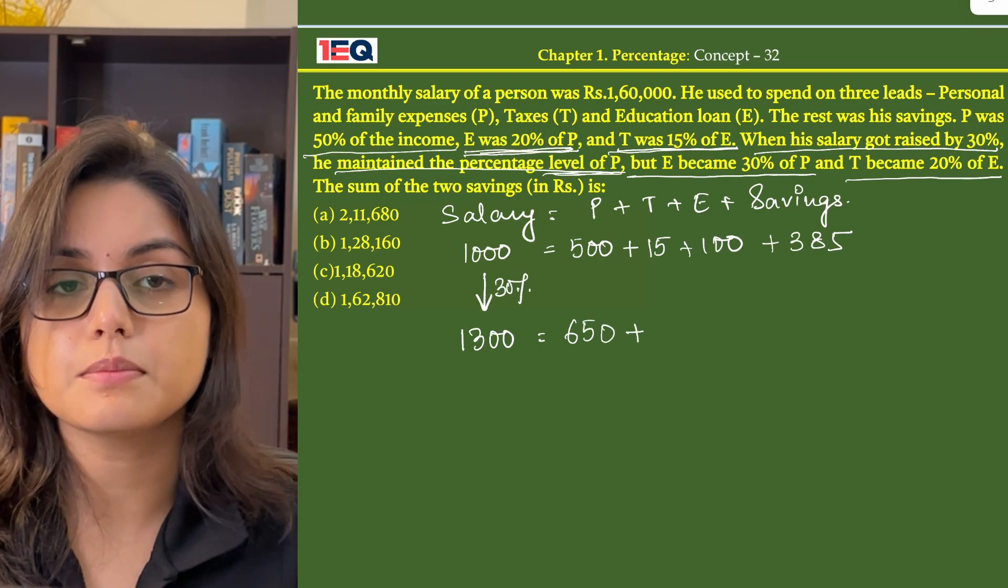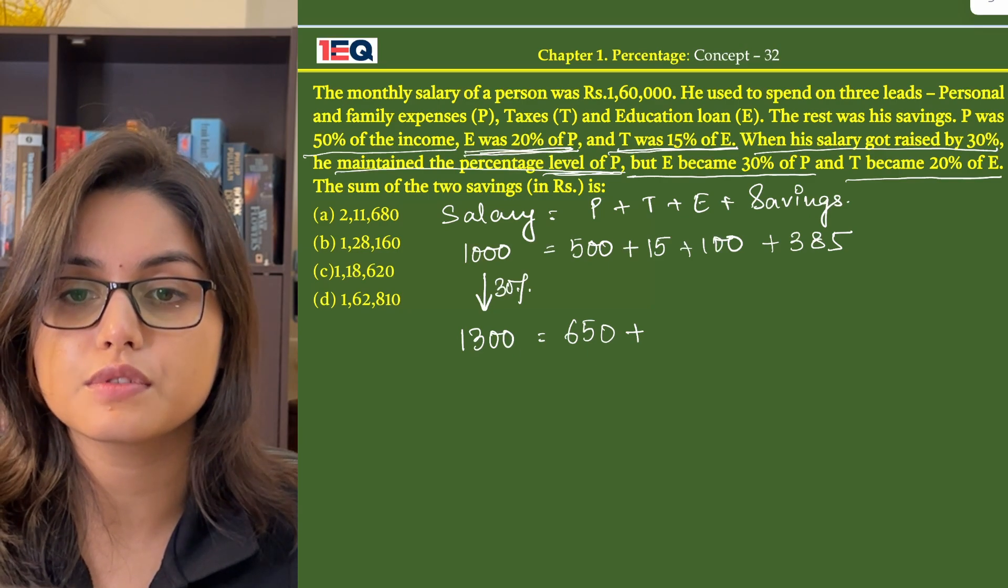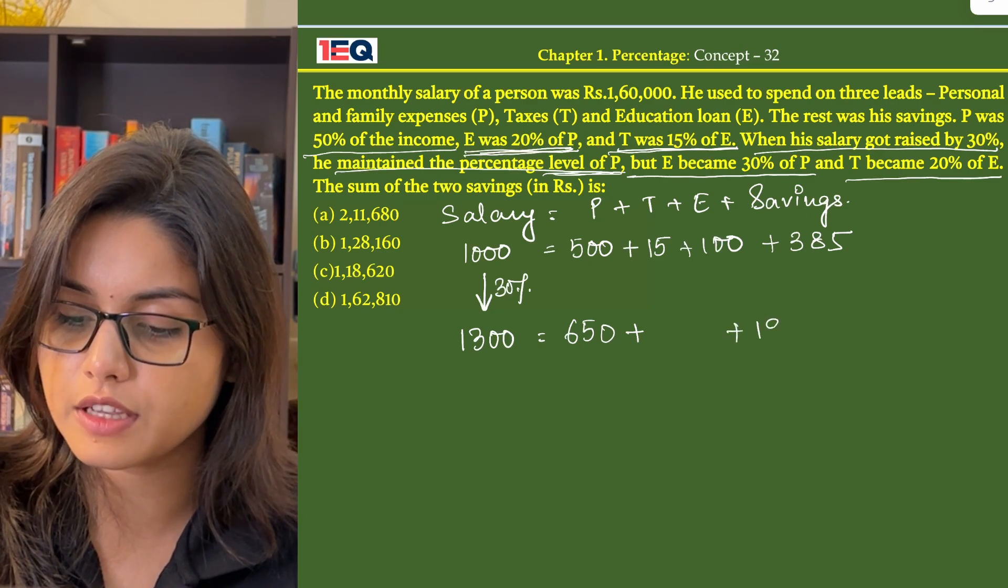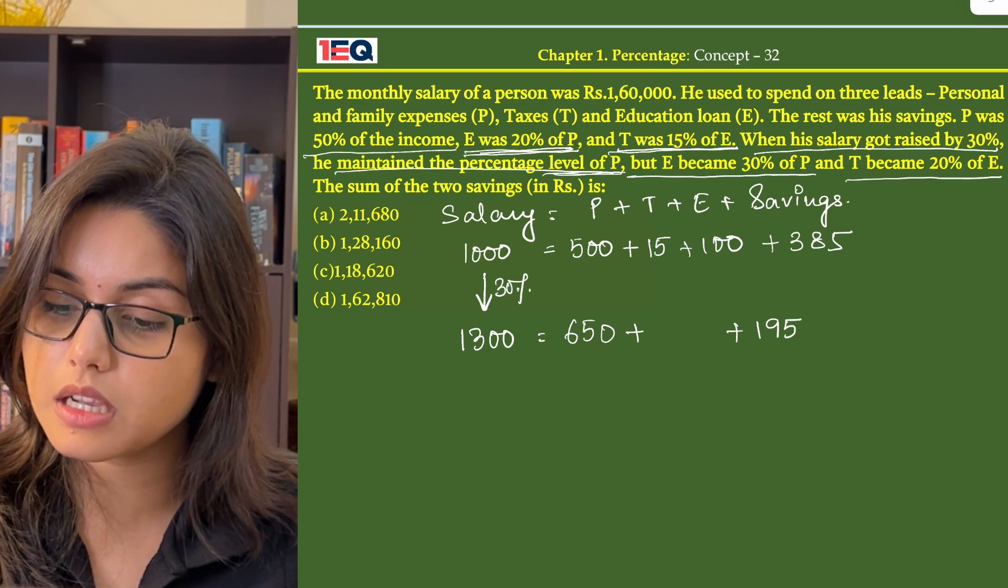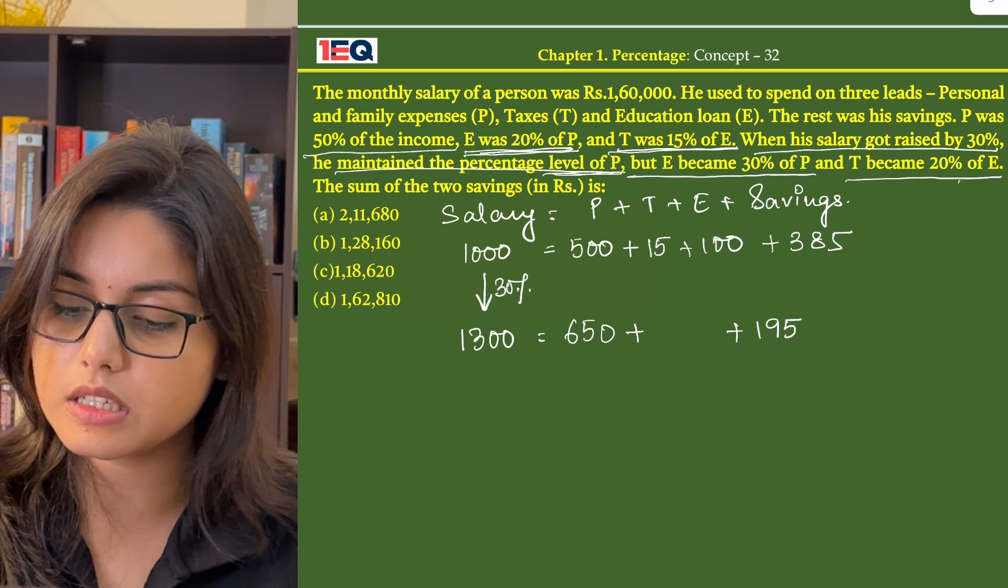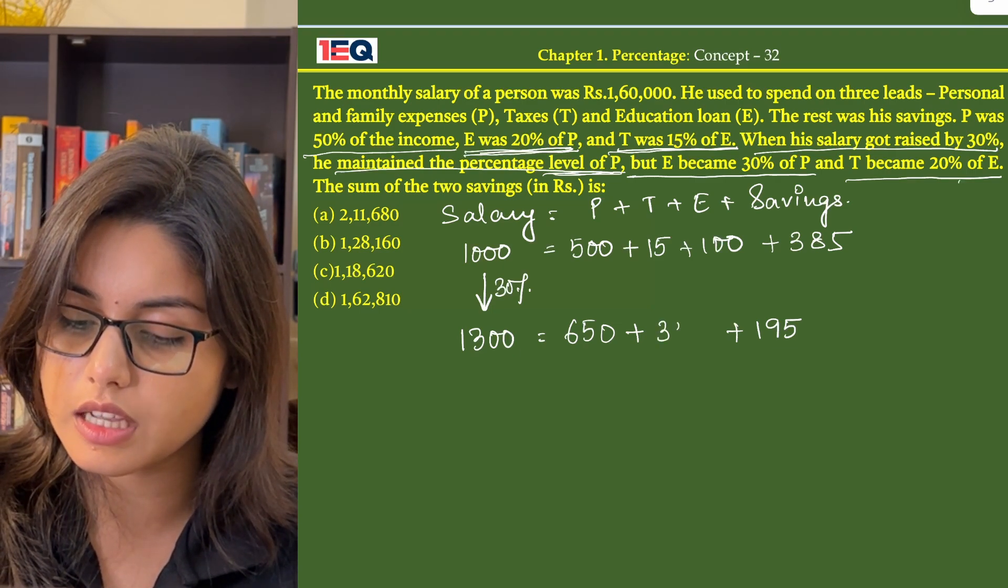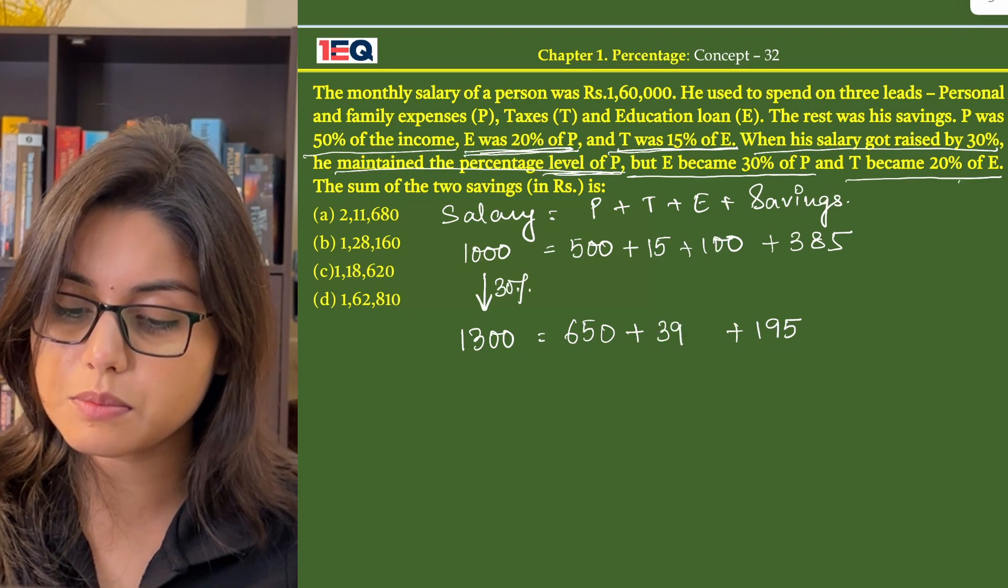E becomes 30% of P. So 30% of 650 is 195. And T becomes 20% of E. So 20% of 195 is Rs 39.